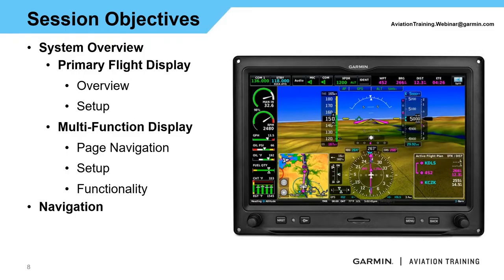We'll also go into some of the functionality of the system and different pages. Then we'll end with some basic navigation — how we can use G3X in its standalone VFR state, from direct-tos and flight planning, as well as limited interaction if we have an external navigator such as a GNS, a GTN, or one of our GPS series — the GPS 175, 355, or 375 series navigators — and the differences you'd see between the two.